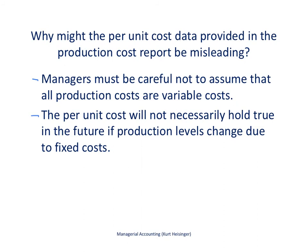There's one last piece to discuss regarding the production cost report: it can be misleading if we're not careful. There is unit cost information on the report, and whenever we present unit cost information we want to make sure users understand it is typically only valid at a certain level of production. It's very unusual for all production costs to be variable costs — we're going to have some fixed costs. Fixed costs don't change in total as production changes, so we must be very careful to let management know that unit cost information is only good within a certain range of production activity.